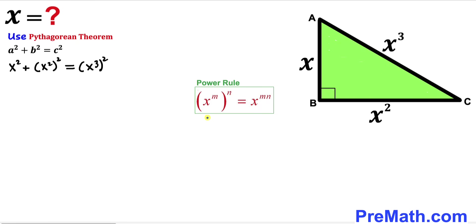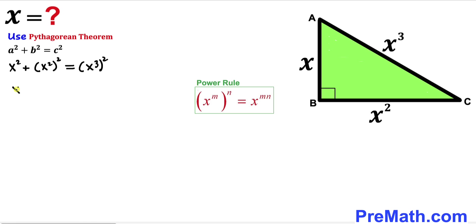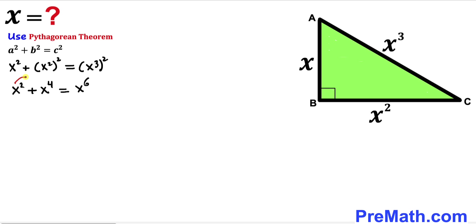The power rule states that x to the power m, raised to the power n, equals x to the power m times n. Applying this rule, (x squared) squared becomes x to the fourth, and (x cubed) squared becomes x to the sixth. This gives us x to the fourth plus x to the fourth minus x to the sixth equals zero — wait, simplifying properly we get x to the sixth minus x to the fourth minus x squared equals zero.